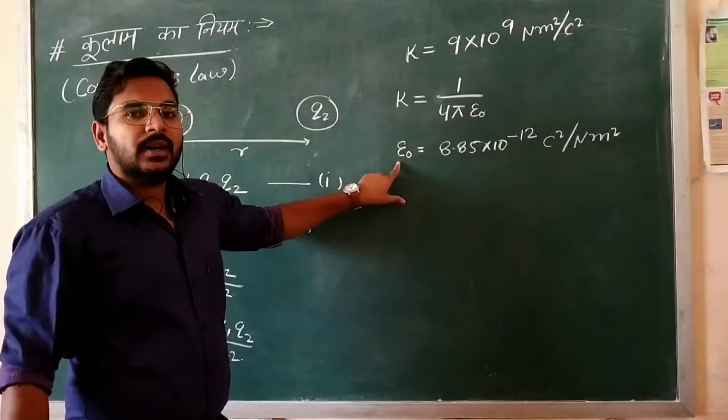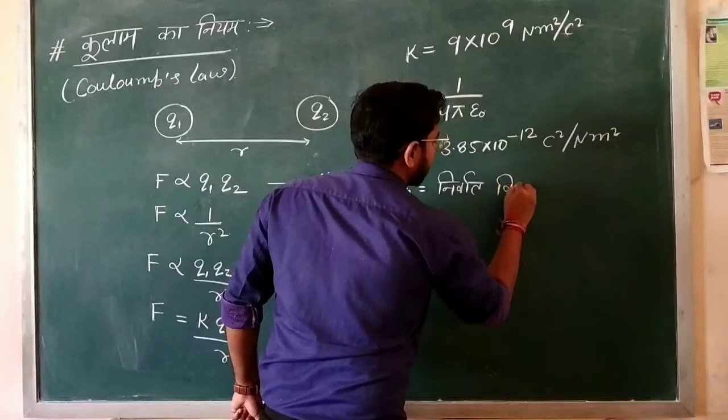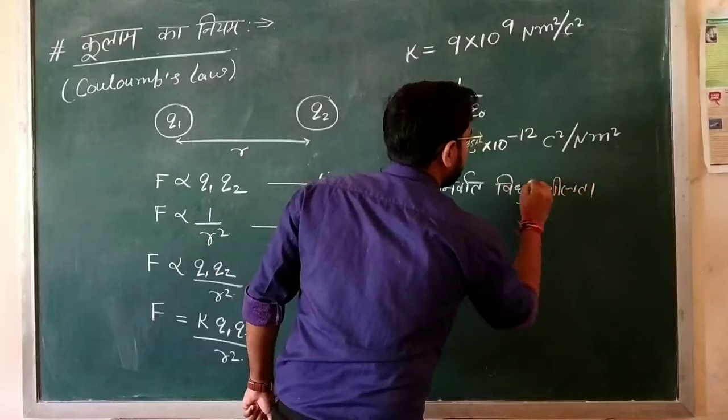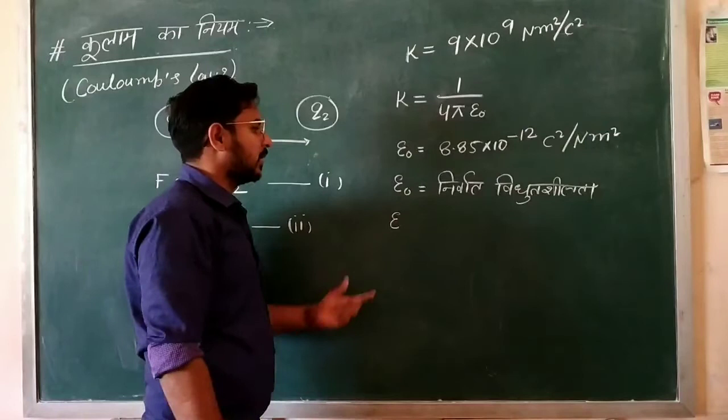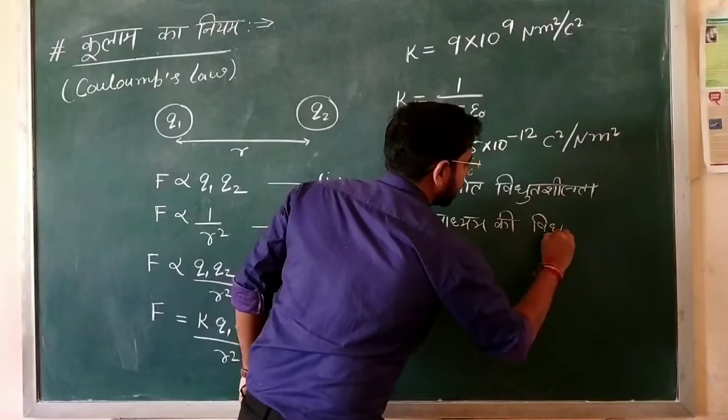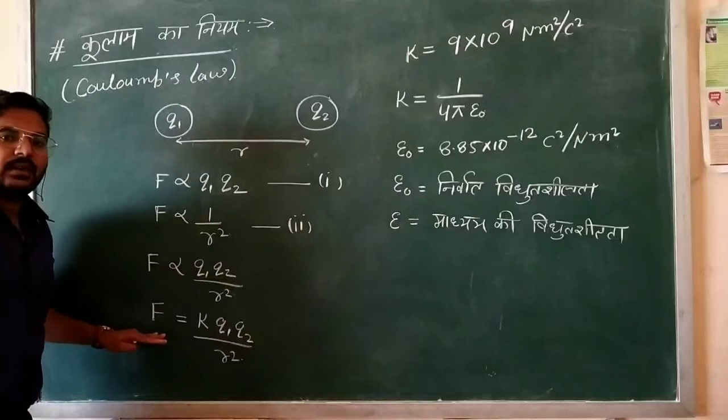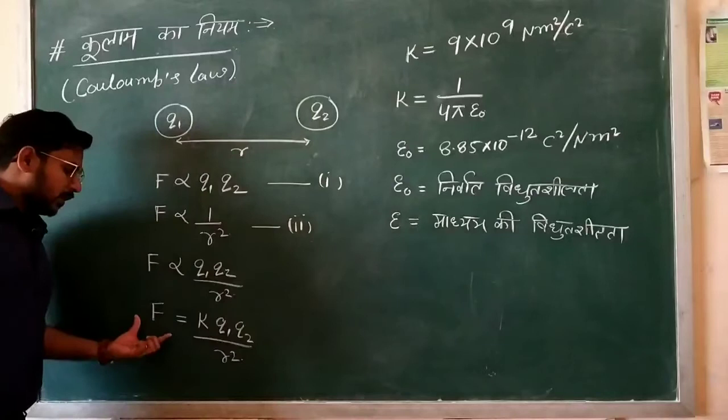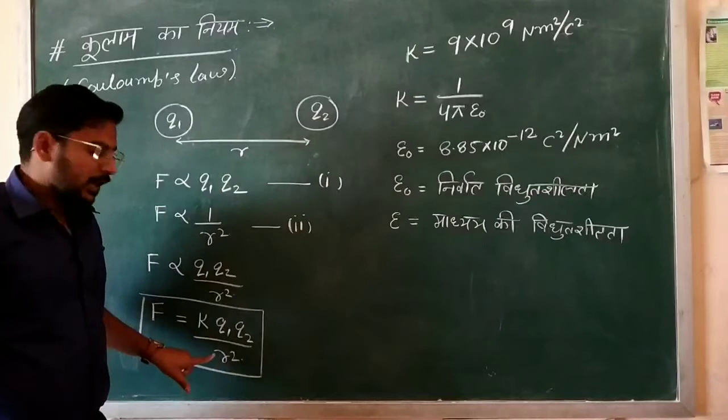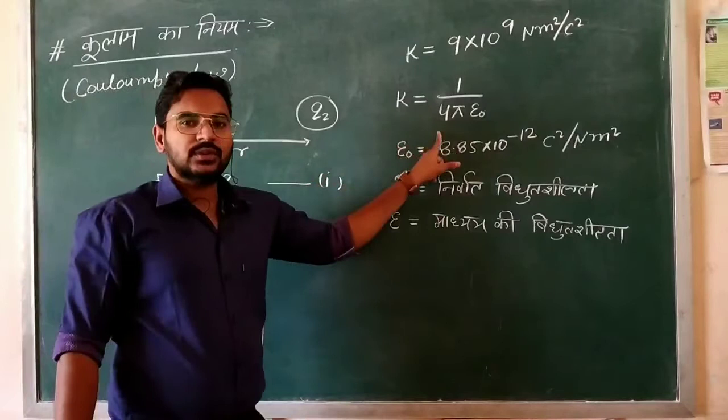This epsilon naught appears in the denominator. When we consider a dielectric medium, the permittivity changes. If the medium has a different dielectric constant, the force between charges will be modified accordingly.